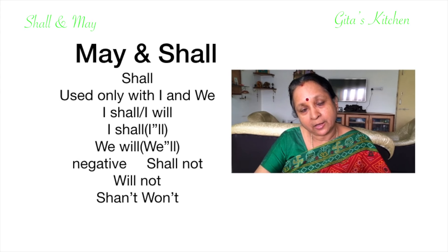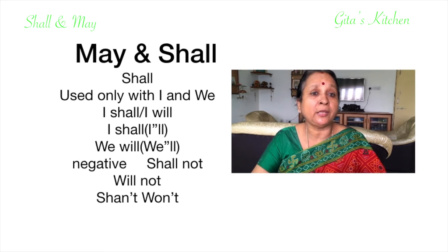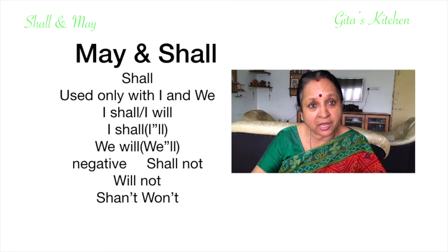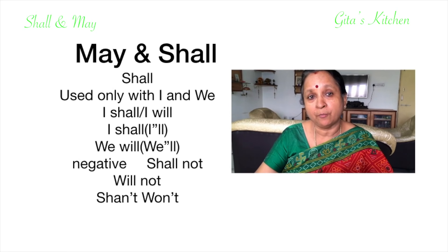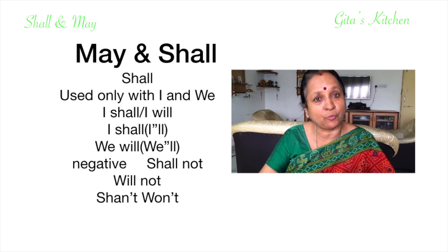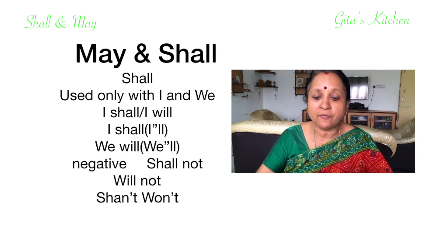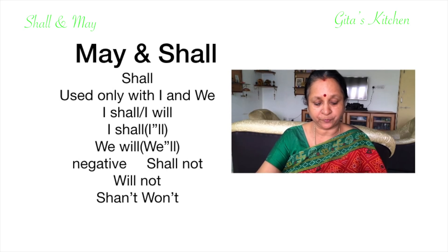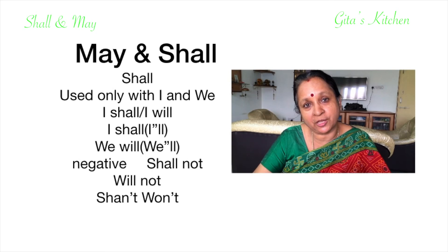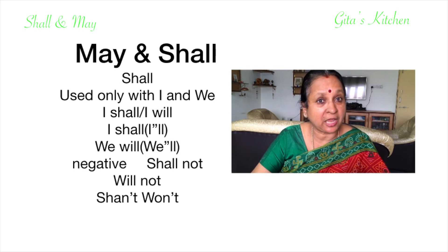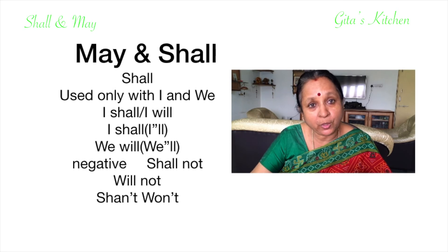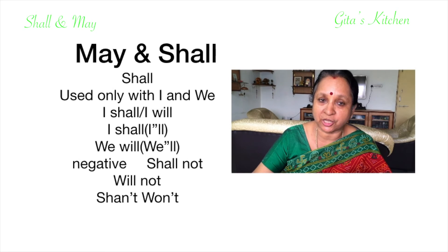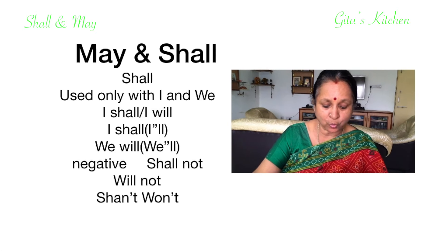For example: 'When will you come back?' — 'I will probably reach home by 8.' You can also say 'I shall probably reach home by 8.' So here we are using 'shall' only with 'I' and 'we.' The negative of 'shall' is 'shall not,' and the negative of 'will' is 'will not.' In short forms we say 'shan't' or 'won't.'